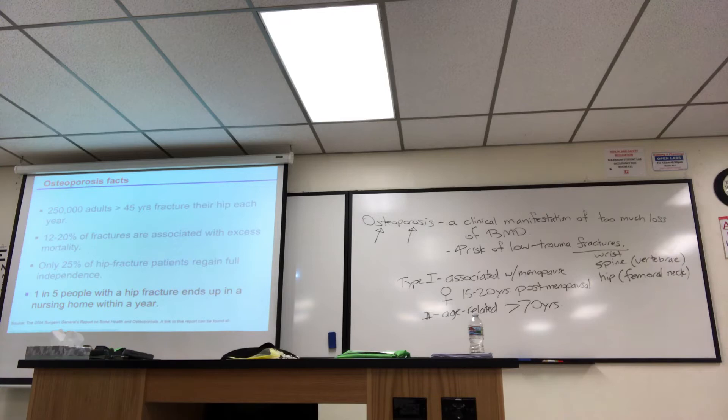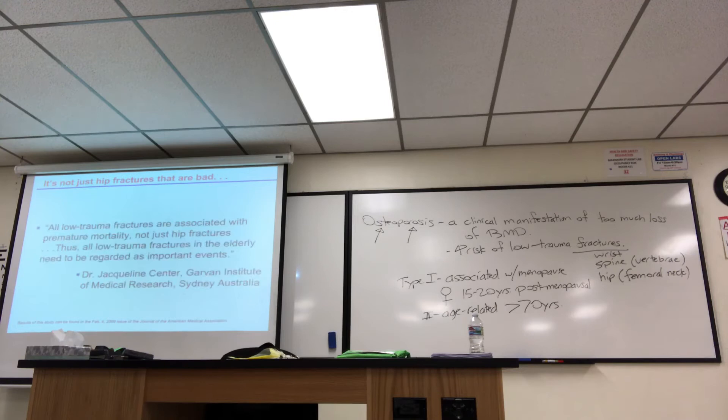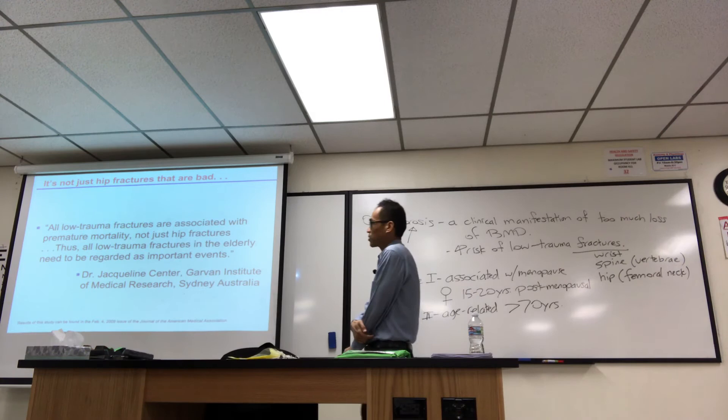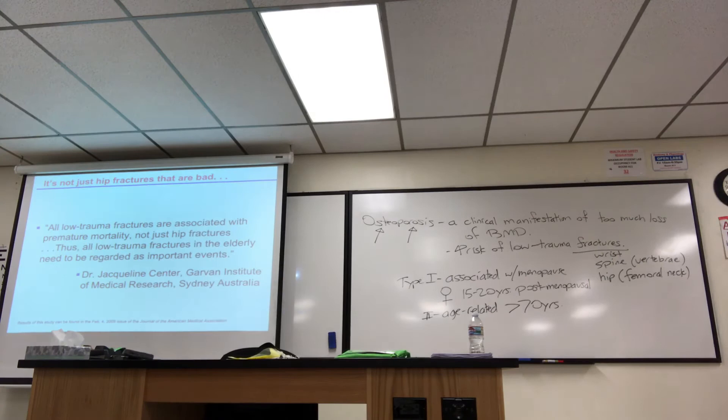So three out of four don't do so well. I mean, only twenty-five percent gain full independence. One in five people with hip fractures end up in a nursing home within a year. So it's a big deal, right? If you hear your grandpa breaks their hip, that's a big deal. It's not like a young person breaking their hip. So it's not just the hip fractures that are bad. All of these low trauma fractures are associated with premature mortality. It's not just hip fractures. Thus, all low trauma fractures in the elderly should be regarded as important events. All right.